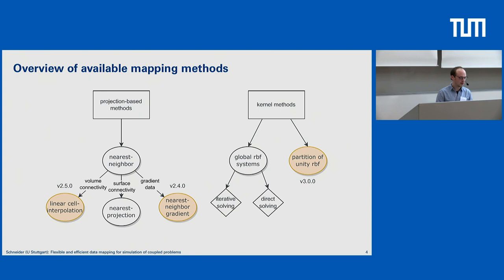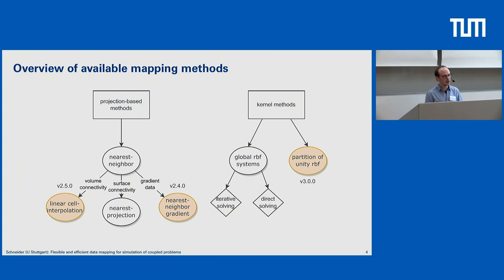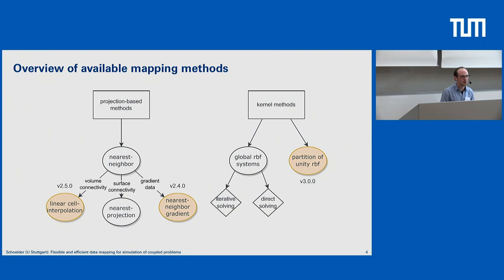Linear cell interpolation was added in version 2.5 by Boris, and is mainly meant for volume coupling. For surface coupling, we need to add surface connectivity — considering a 3D scenario, we define triangles and quadrilaterals for an extended nearest neighbor mapping. We can also add derivative or gradient data to use nearest neighbor gradient mapping, which was also added last year. The mapping itself for nearest neighbor and nearest neighbor gradient is essentially the same; we just use the additional gradient data to get an improved interpolant on our output vertex.